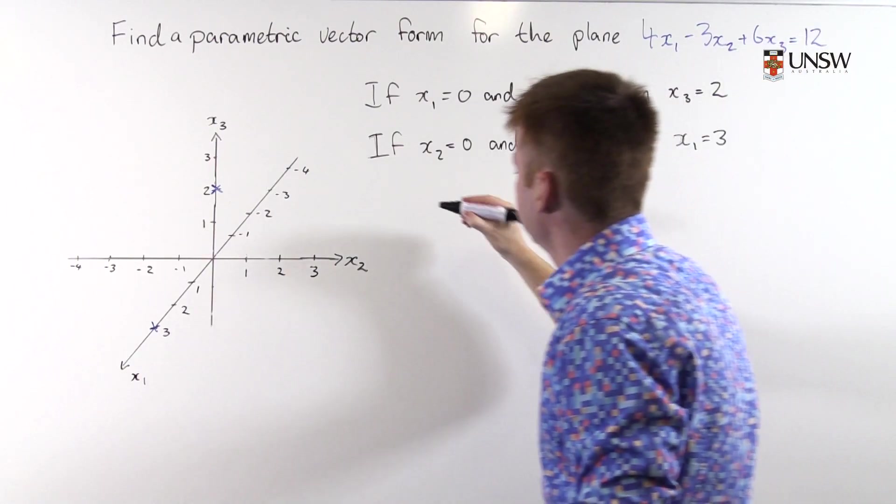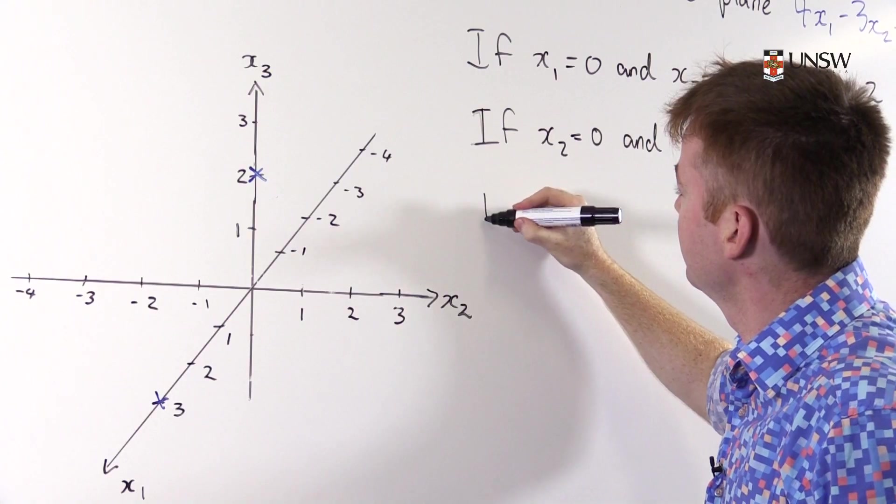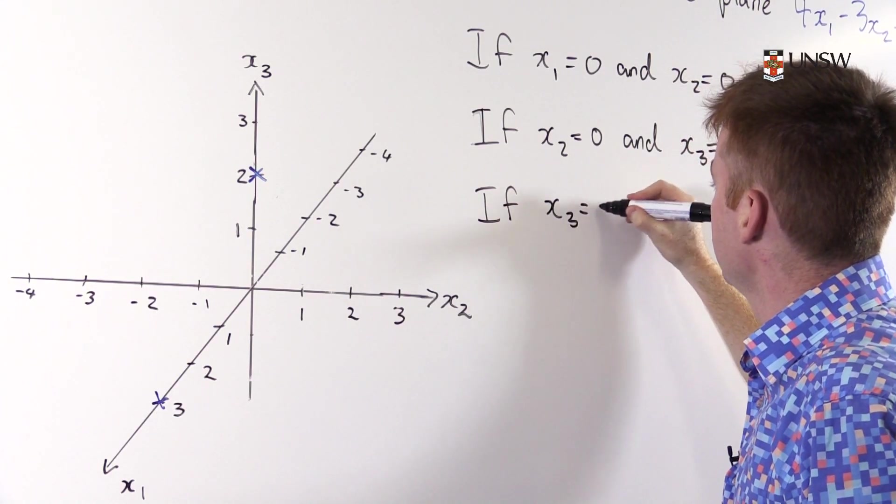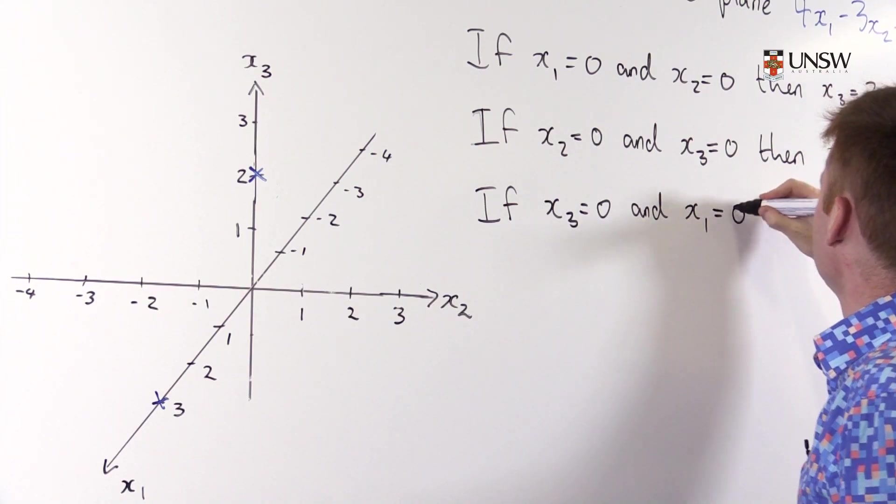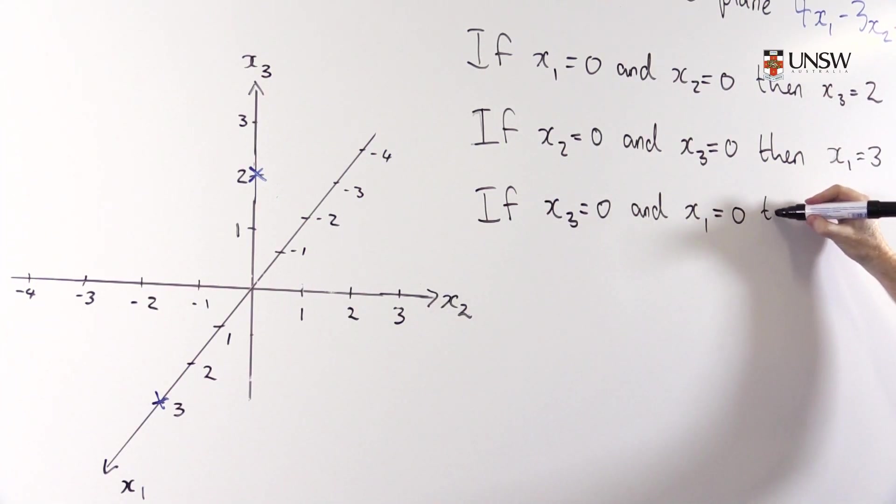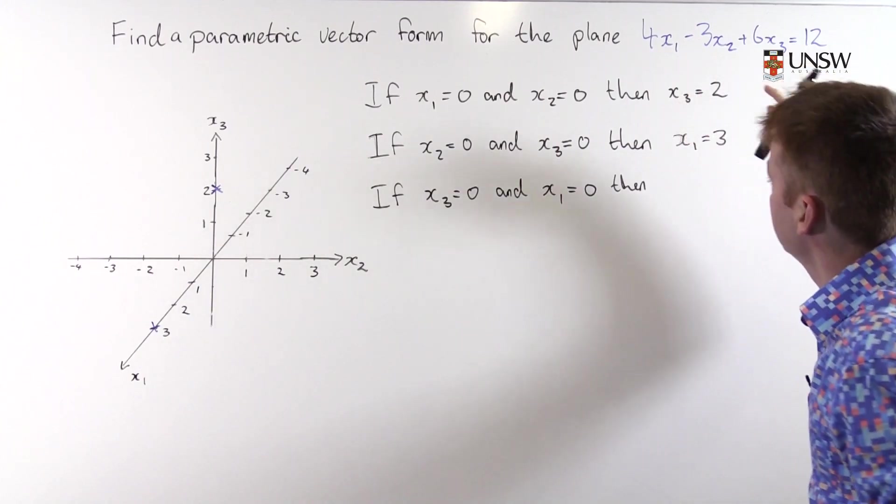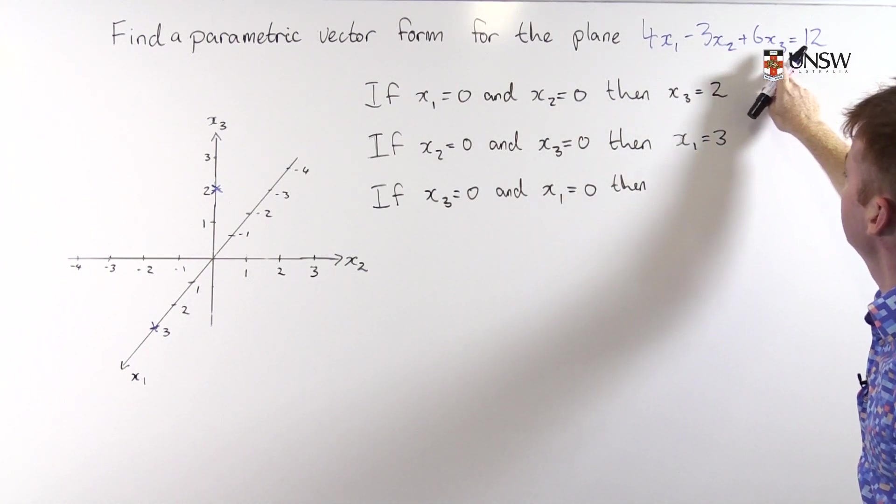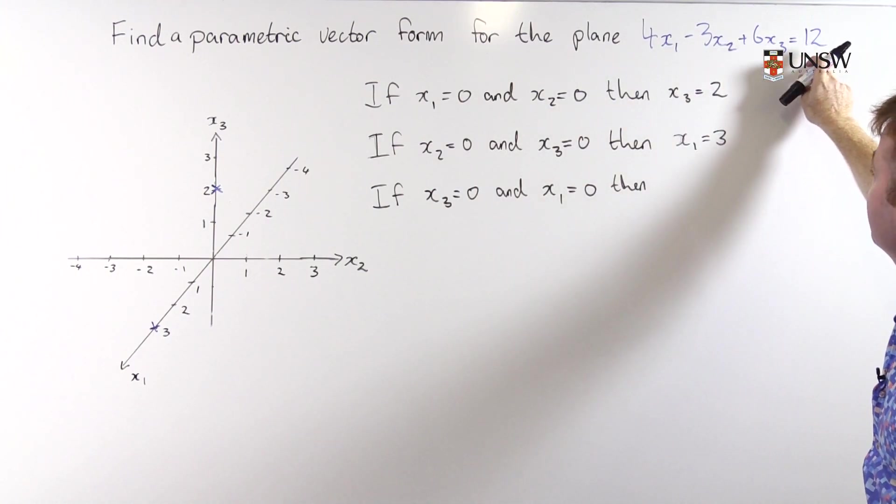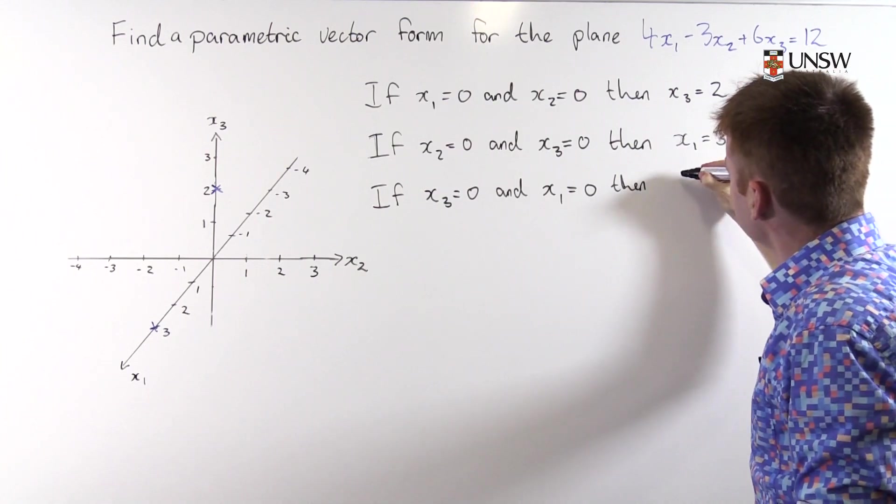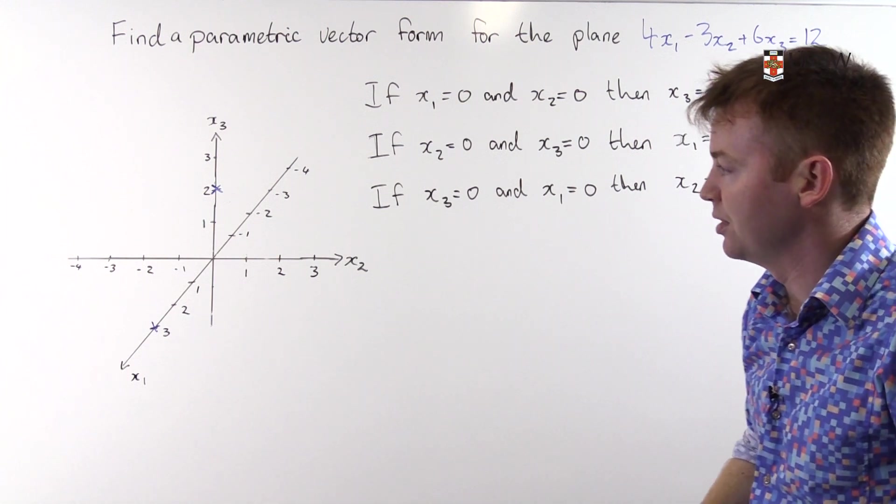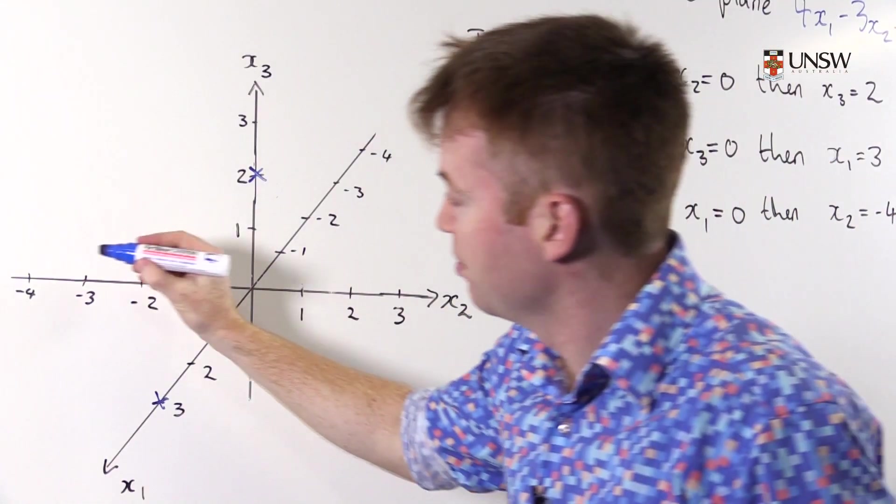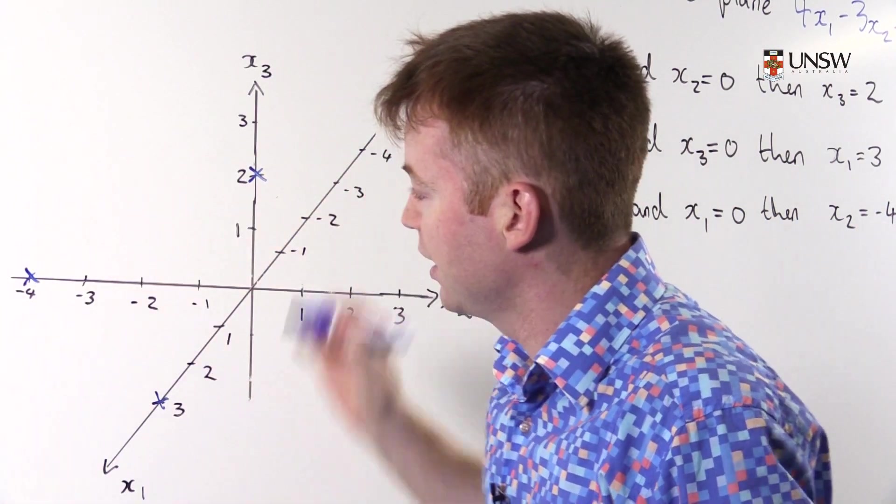If x₃ = 0 and x₁ = 0 then, if that bit's 0 and that bit's 0, negative 3x₂ is 12 so x₂ must be equal to negative 4. And we have our third point on the plane with x₂ component negative 4 like that.